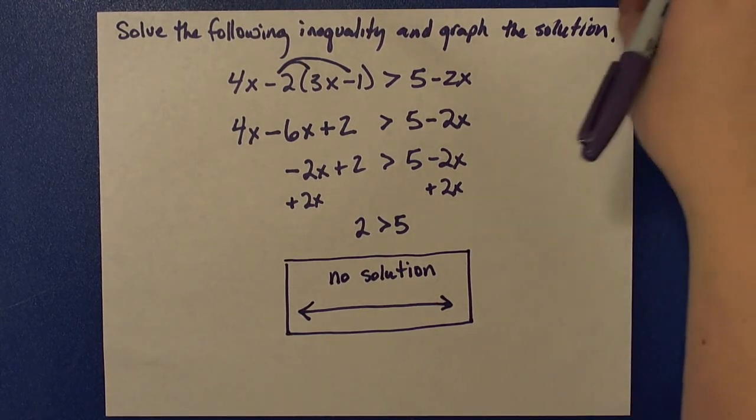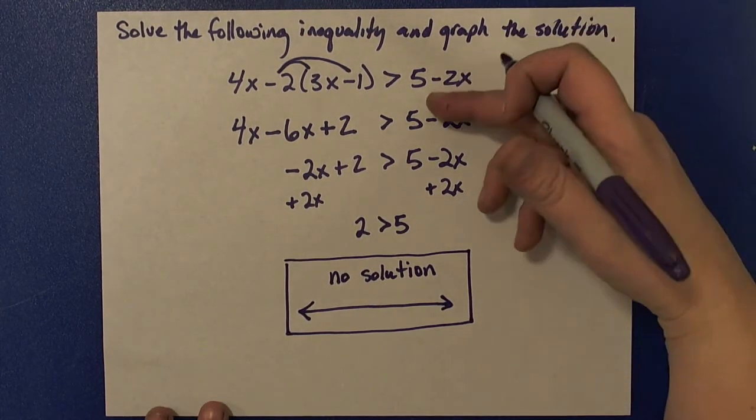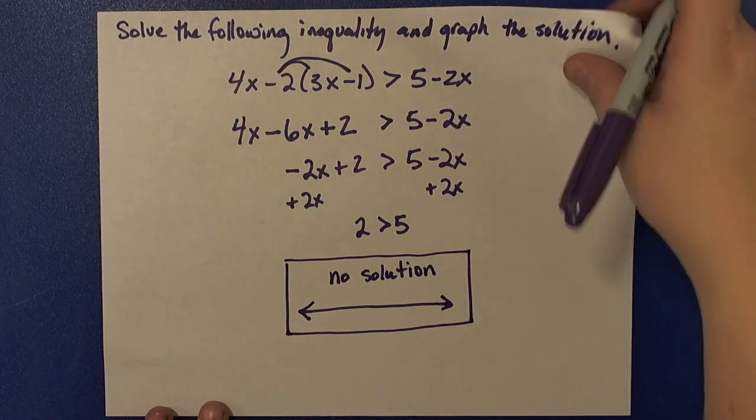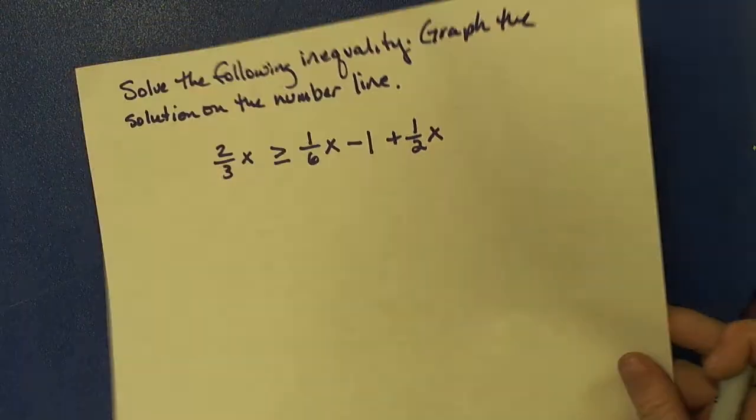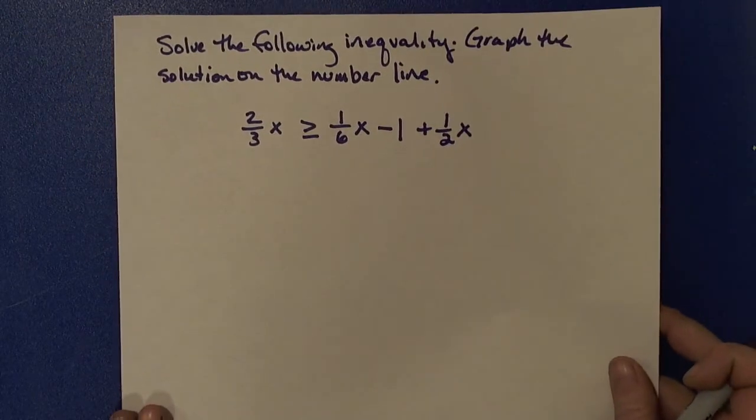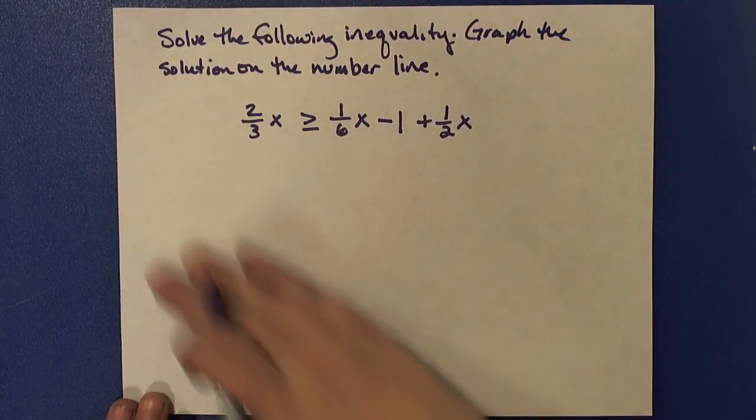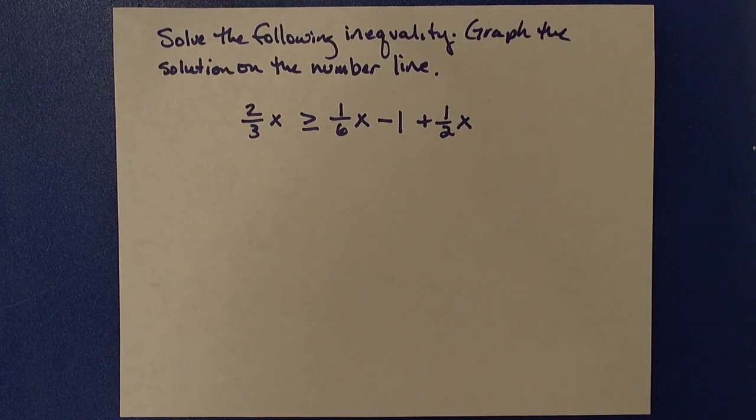I want to show you one other problem that's similar in that it has the x values drop out as the problem is solved. So let's take a look at this problem here. This problem asks us to solve the inequality again and graph the solution on the number line.